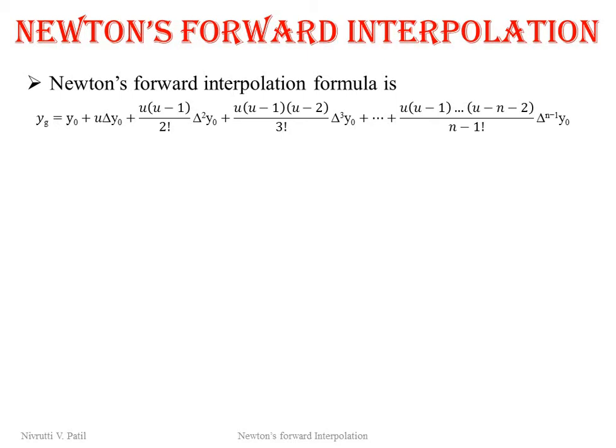The series continues up to the (n−1)th forward difference, where n is the number of data points. Here, u is defined as (xg − x0) / h, where xg is the value of x at which we need to find y, and h is the difference between two consecutive x values, which is constant for all x.